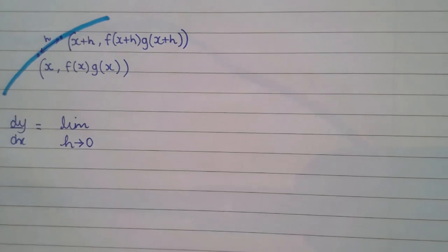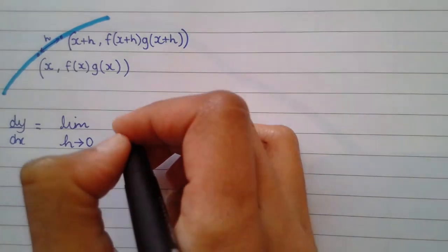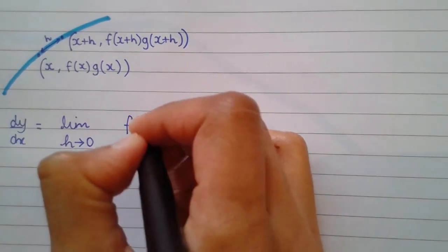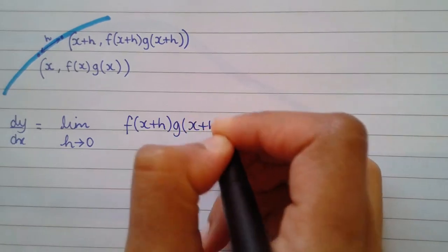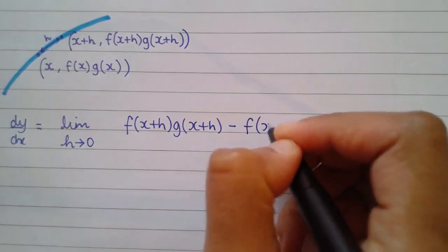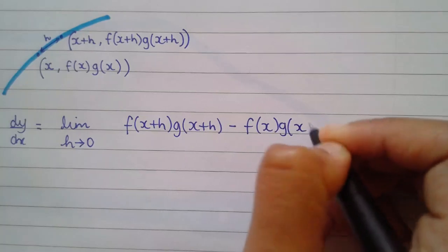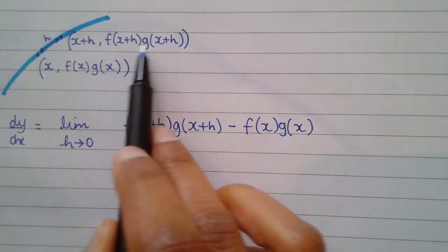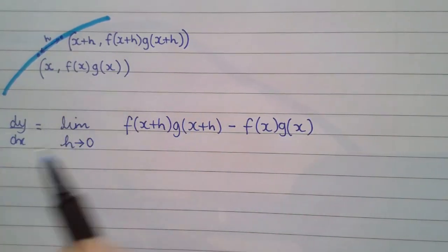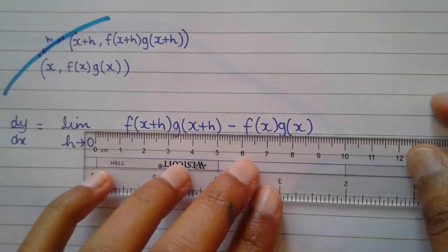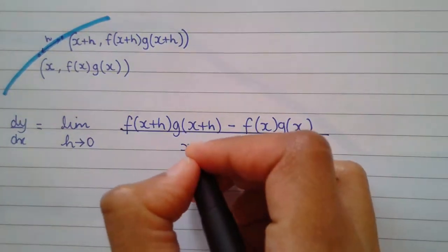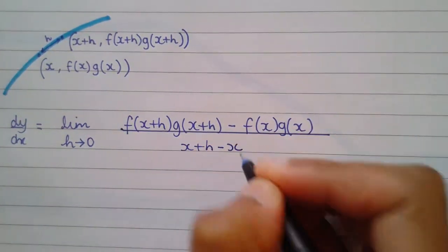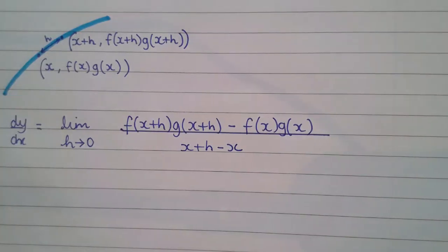dy by dx is the gradient function and the gradient function is what we are trying to find out, is the difference between the y coordinates, which is the difference between this coordinate and this coordinate here, all over x plus h minus x, which is the difference between the x coordinates.